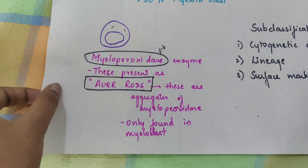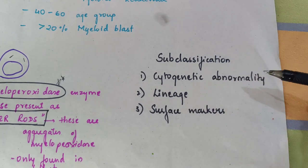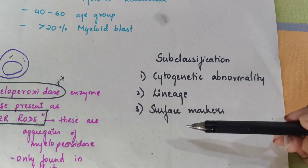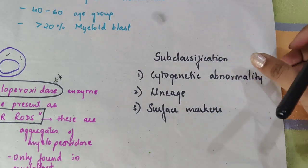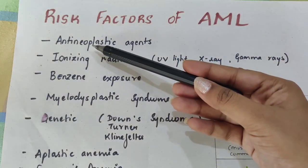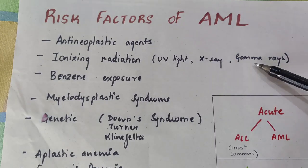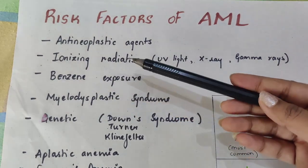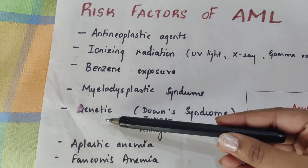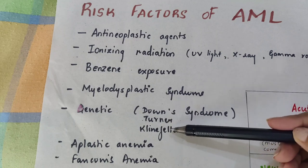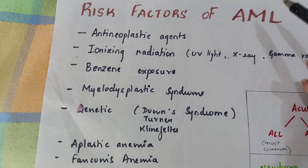Subclassification of AML is done based on three parts: cytogenetic abnormality, lineage, and surface markers. The risk factors of AML include exposure to anti-neoplastic agents, ionizing radiation such as UV light, X-rays, and gamma rays, benzene exposure, myelodysplastic syndromes, and genetic conditions such as Down syndrome, Klinefelter syndrome, aplastic anemia, and Fanconi anemia.